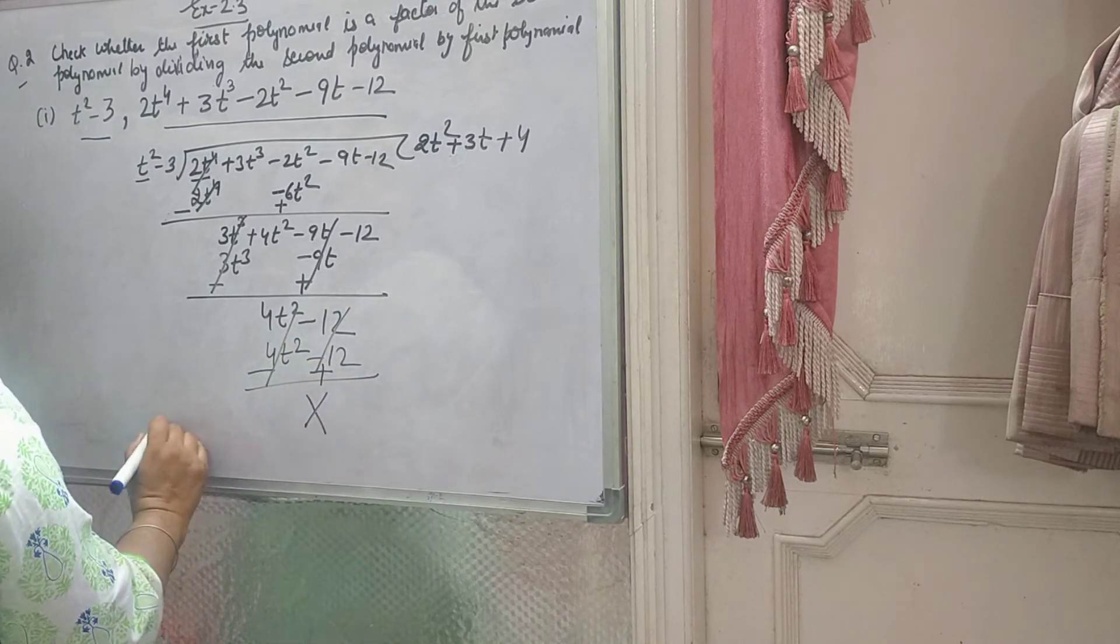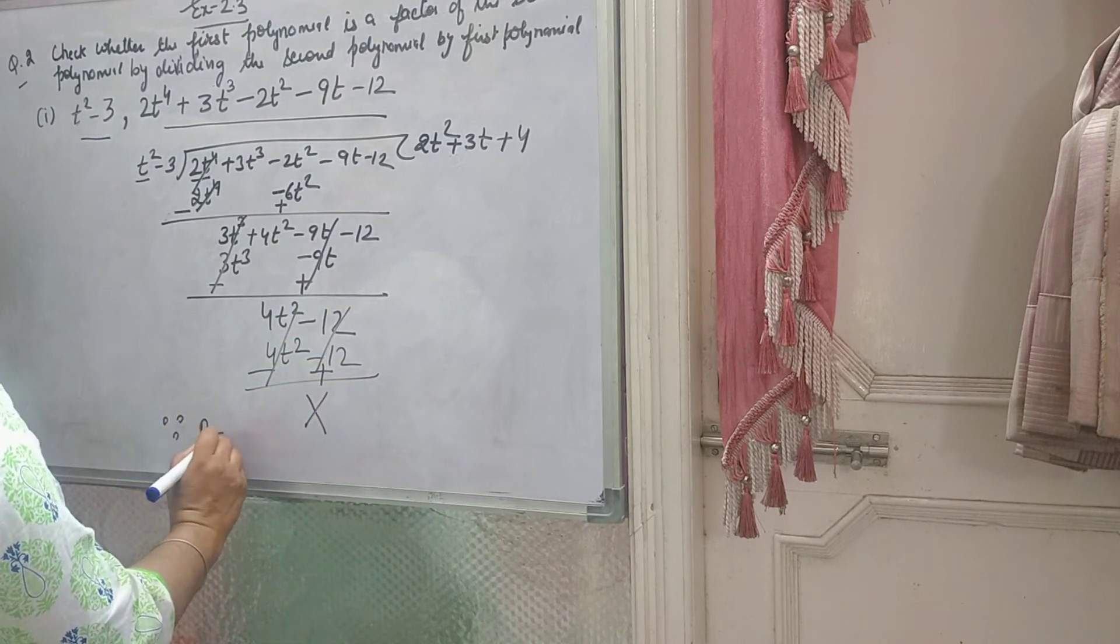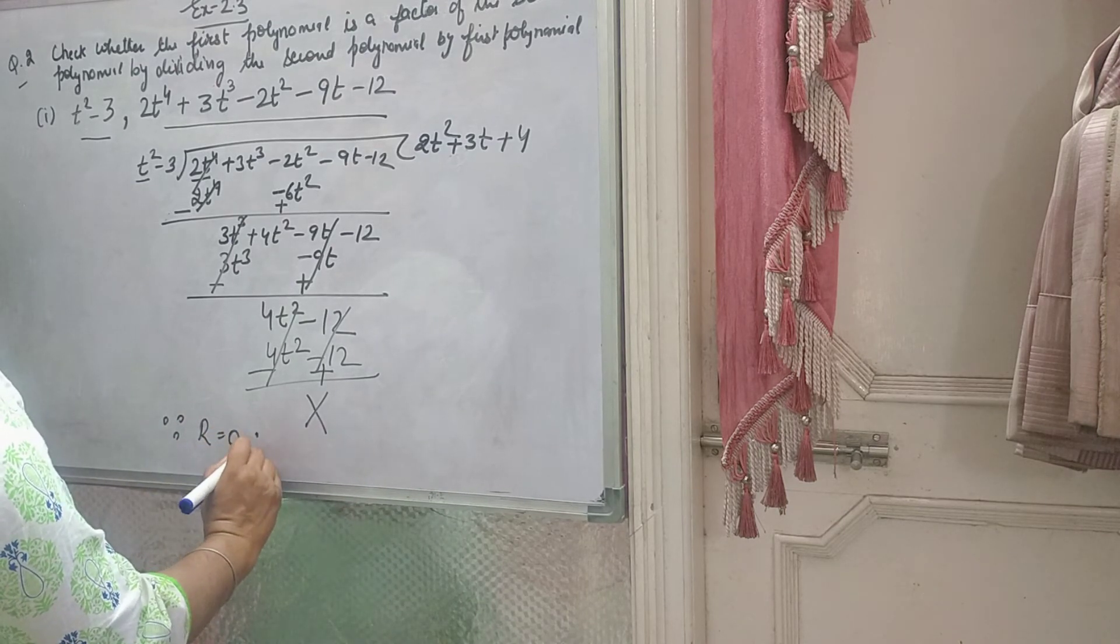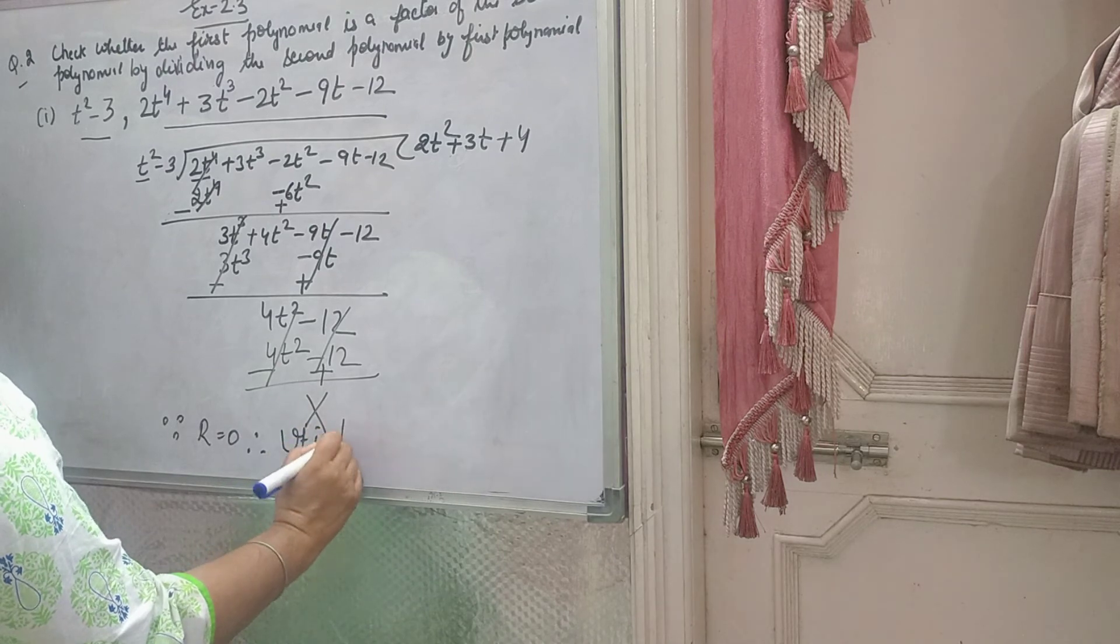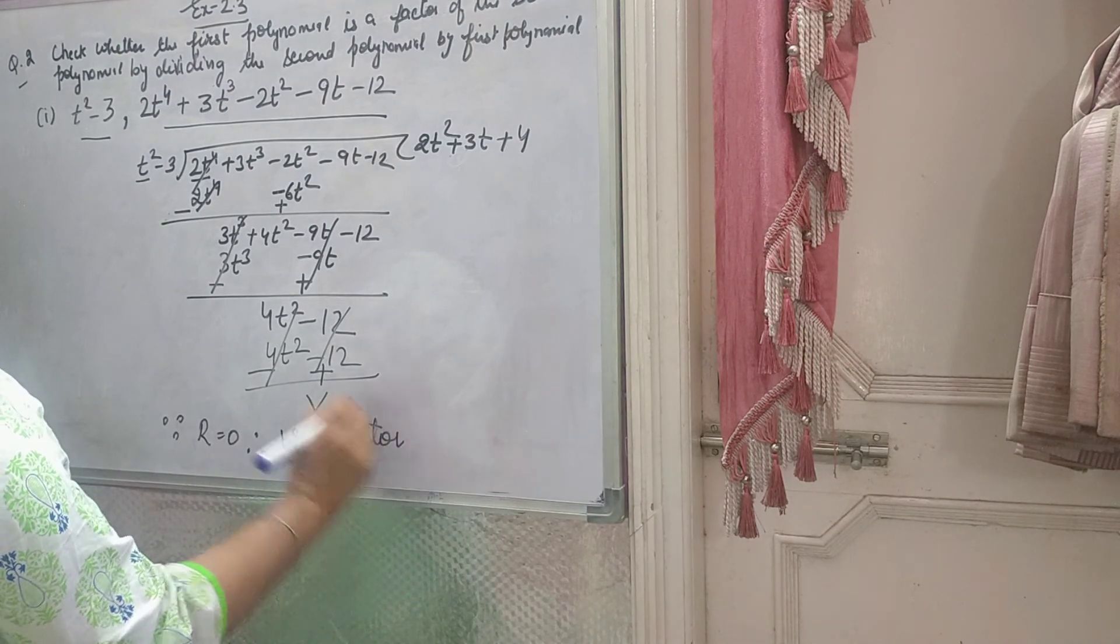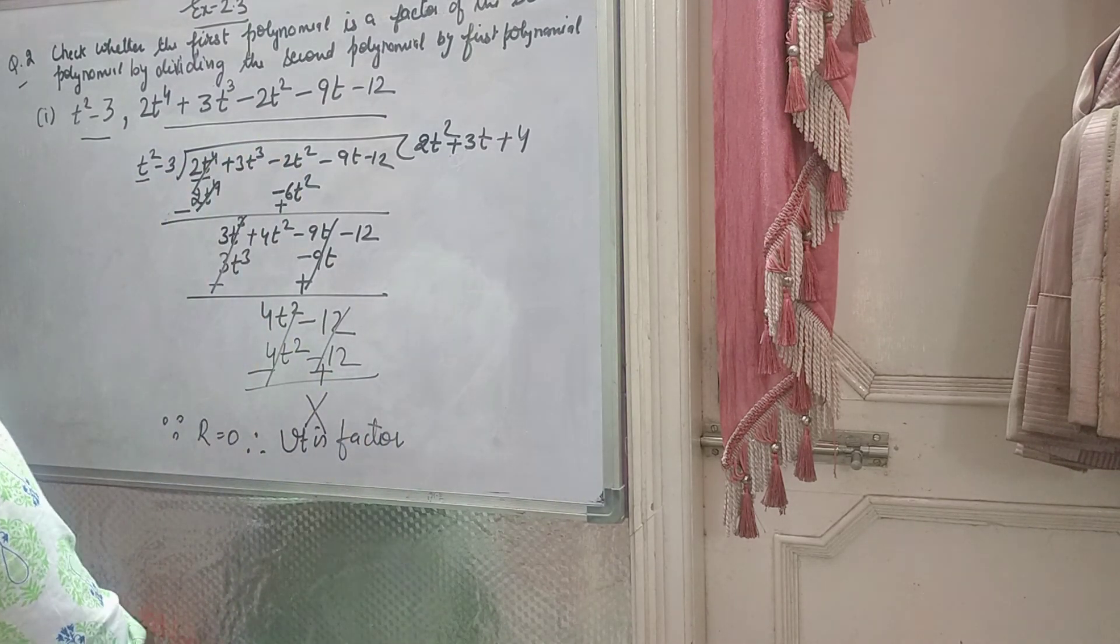Like this, since remainder is 0, therefore it is a factor. Means the first polynomial is factor of second polynomial.